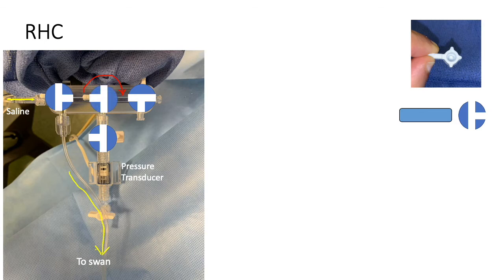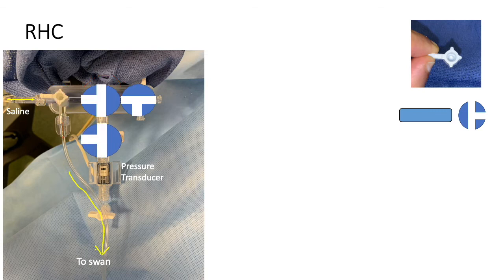Now you will see that the transducer is in direct communication with the Swann-Gans catheter. And this is how you can measure right heart pressures.